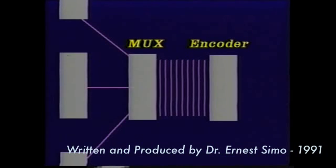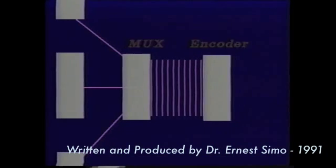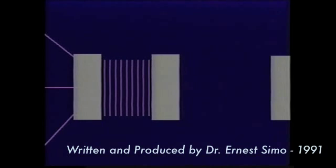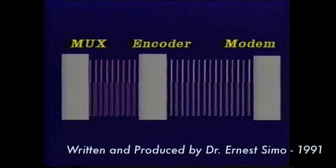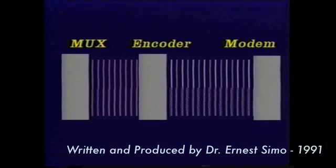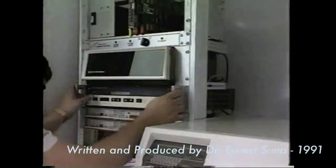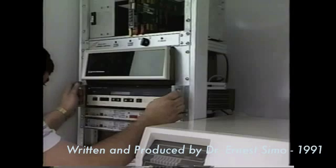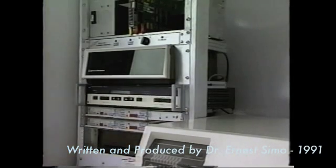The aggregate bit stream output of the multiplexer is received by the encoder portion of the modem. This device inserts bits in the appropriate places in the data stream, giving the receiving device's decoder information regarding the integrity of the transmitted data. Common schemes of encoding are seven-eighths, three-quarters, and one-half rate forward error correction (FEC).